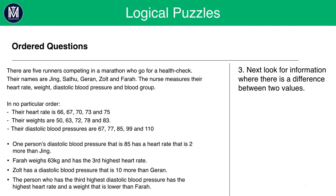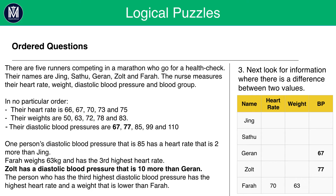Next, we should look for information where there is a difference between two values. This will help us decipher the value of one of the heart rates, weights or diastolic blood pressures. Looking at the third line, we see Zolt has a diastolic blood pressure that is 10 more than Jiran. There are only two values that have a difference of 10 for blood pressure: 67 and 77. We know that Zolt has the higher blood pressure, therefore Zolt will have a blood pressure of 77 and Jiran will have a blood pressure of 67.